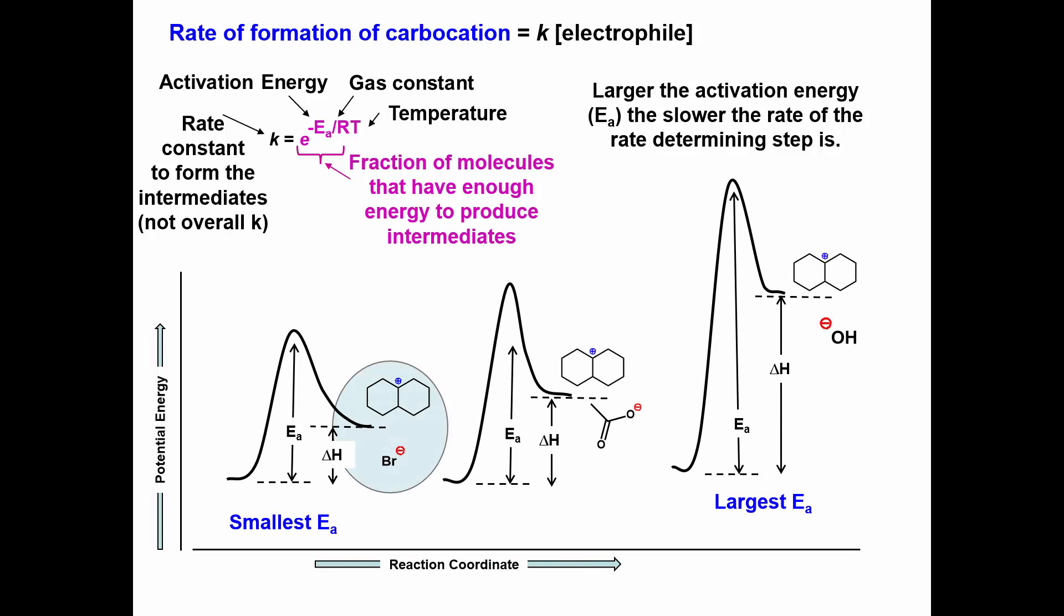Since the bromide ion is the weakest base, or the most stable leaving group, the activation energy to form these intermediates will be the smallest. Thus this reaction will occur the fastest.